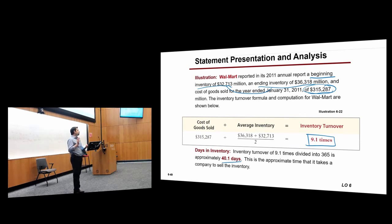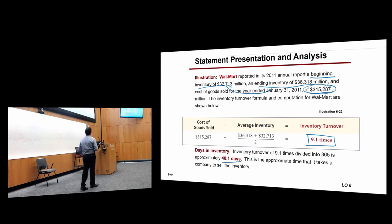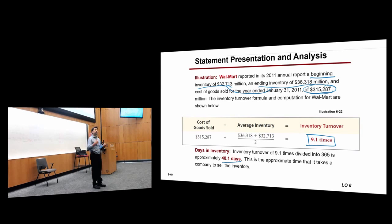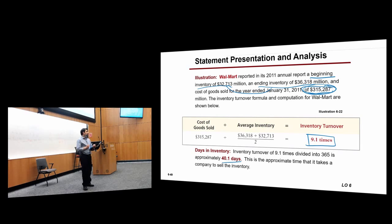Days in inventory: 365 divided by 9.1 equals 40.1 days — it takes Walmart 40.1 days to sell their inventory completely. You have to learn these formulas for the exam. You might have to first calculate cost of goods sold to get inventory turnover, then divide to get days in inventory.